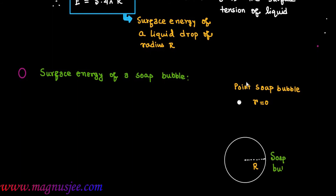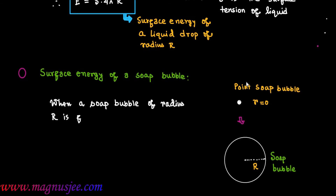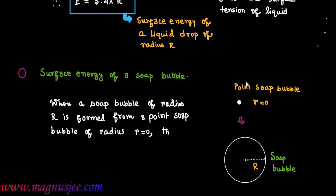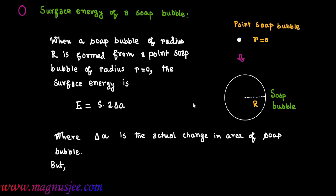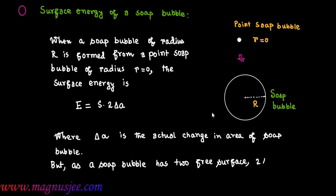When a soap bubble of radius capital R is formed from a point soap bubble, the surface energy equals S dot 2 delta A — the product of surface tension and changing area — where delta A is the actual change in area of the soap bubble. The factor of 2 appears because the soap bubble has two free surfaces.